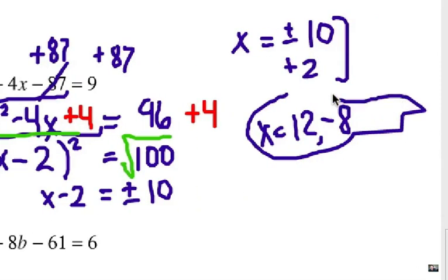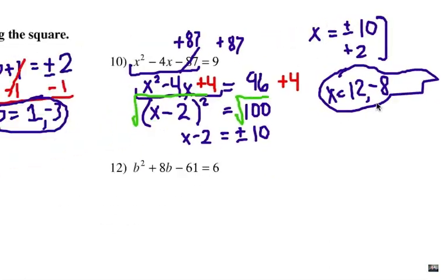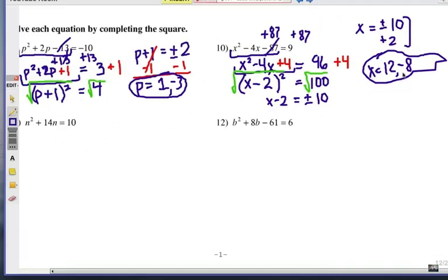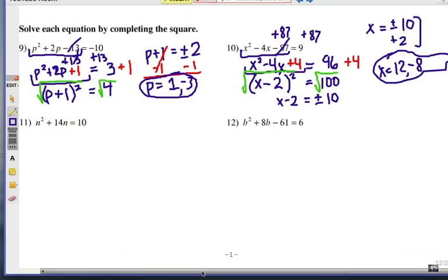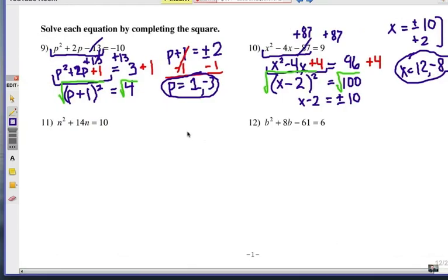Okay, two answers for X, positive 12, negative 8. Alright, thanks for watching this video. Look for problem set 3, where you try these two problems and completing the square.